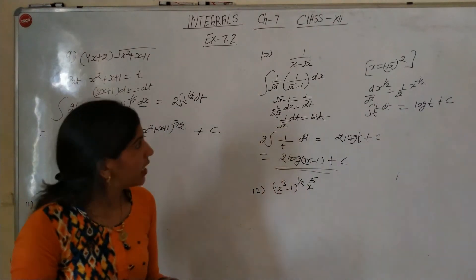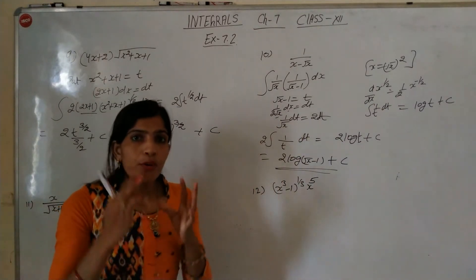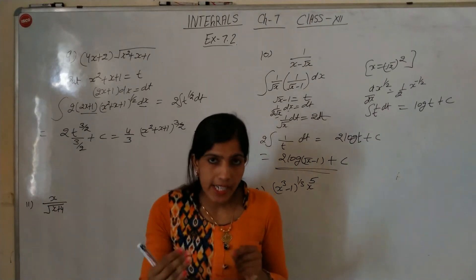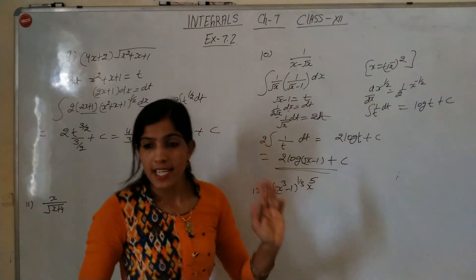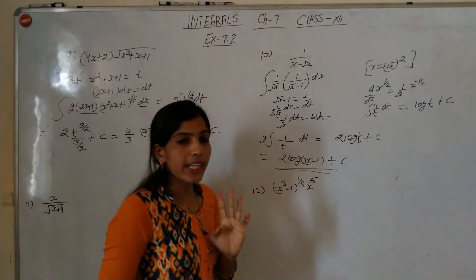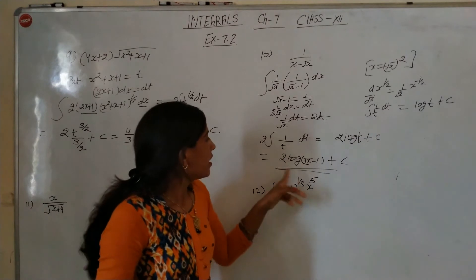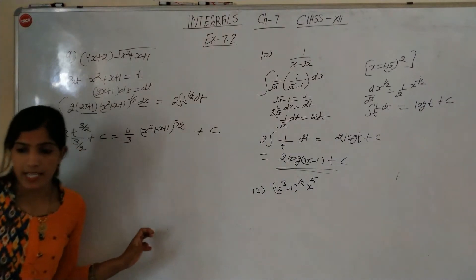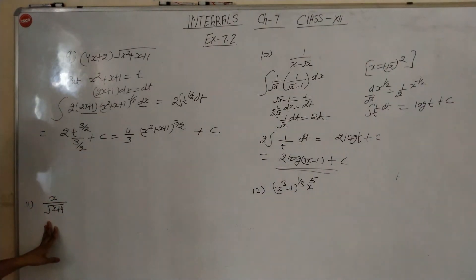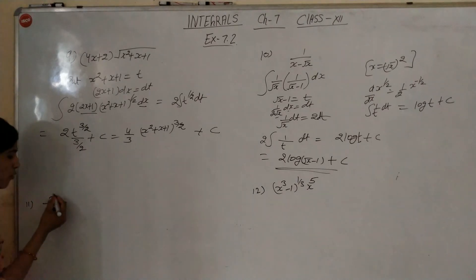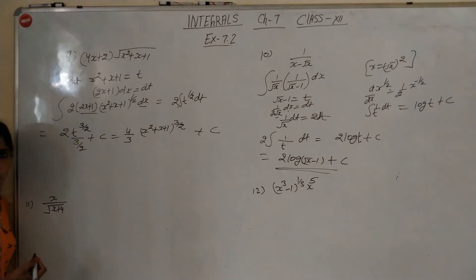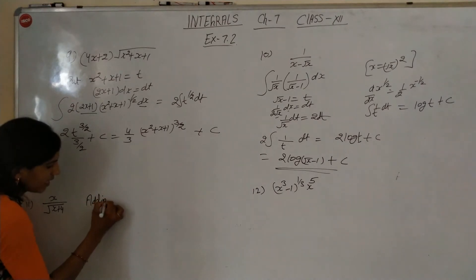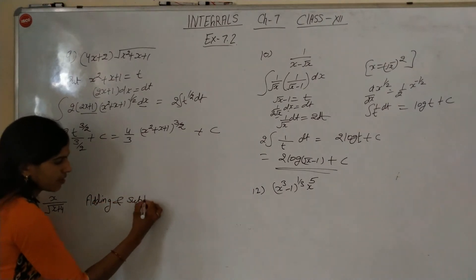To summarize: x was written as the square of root x, root x was factored out, root x minus 1 was put as t, giving 1 by root x dx as 2 dt. The integral of 1 by t is log t, and substituting t back gives the answer. Now for the next question, we use adding and subtracting 4 in the numerator.